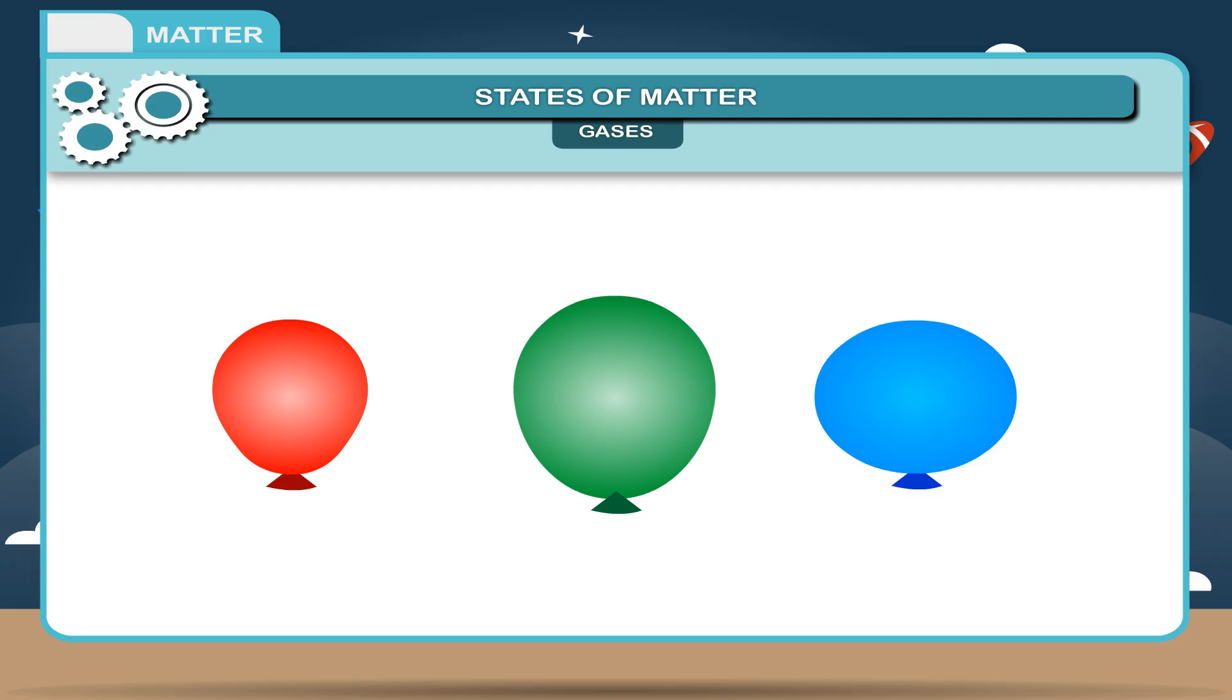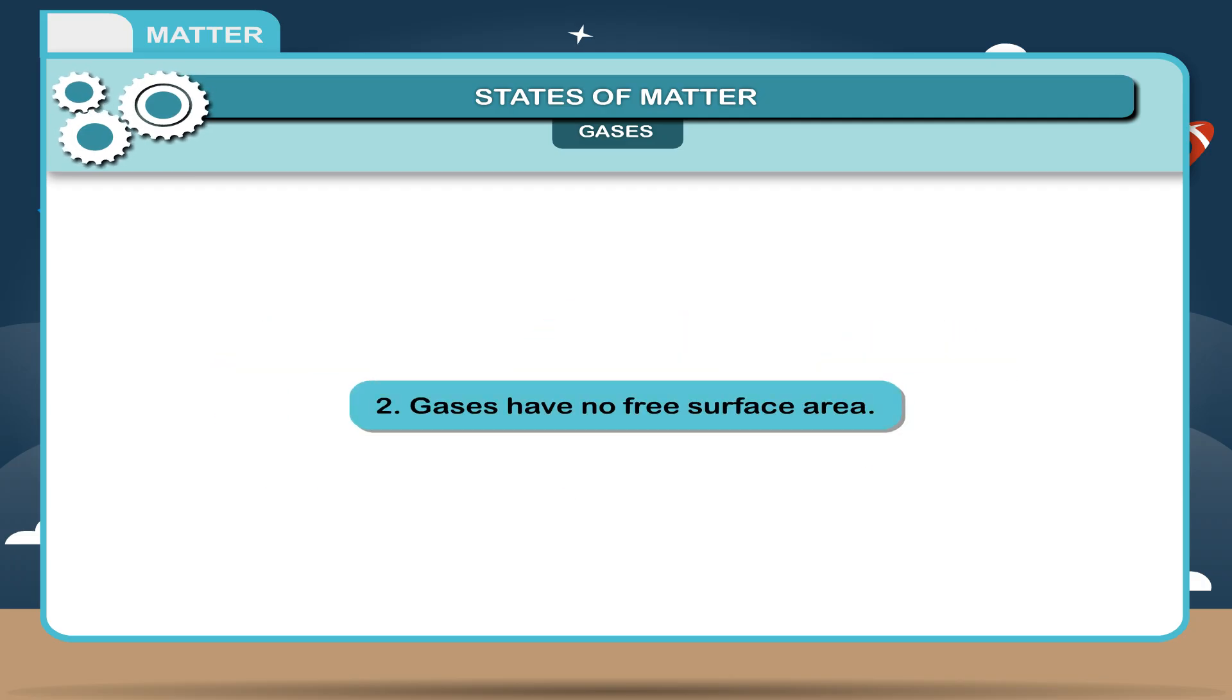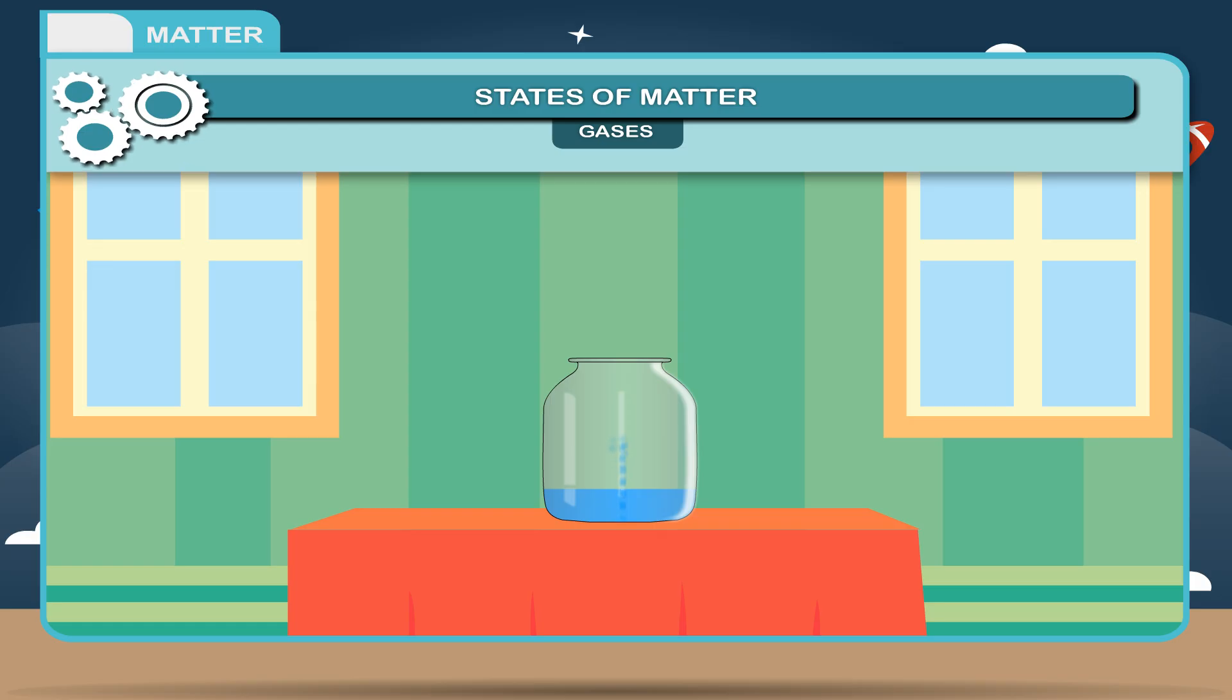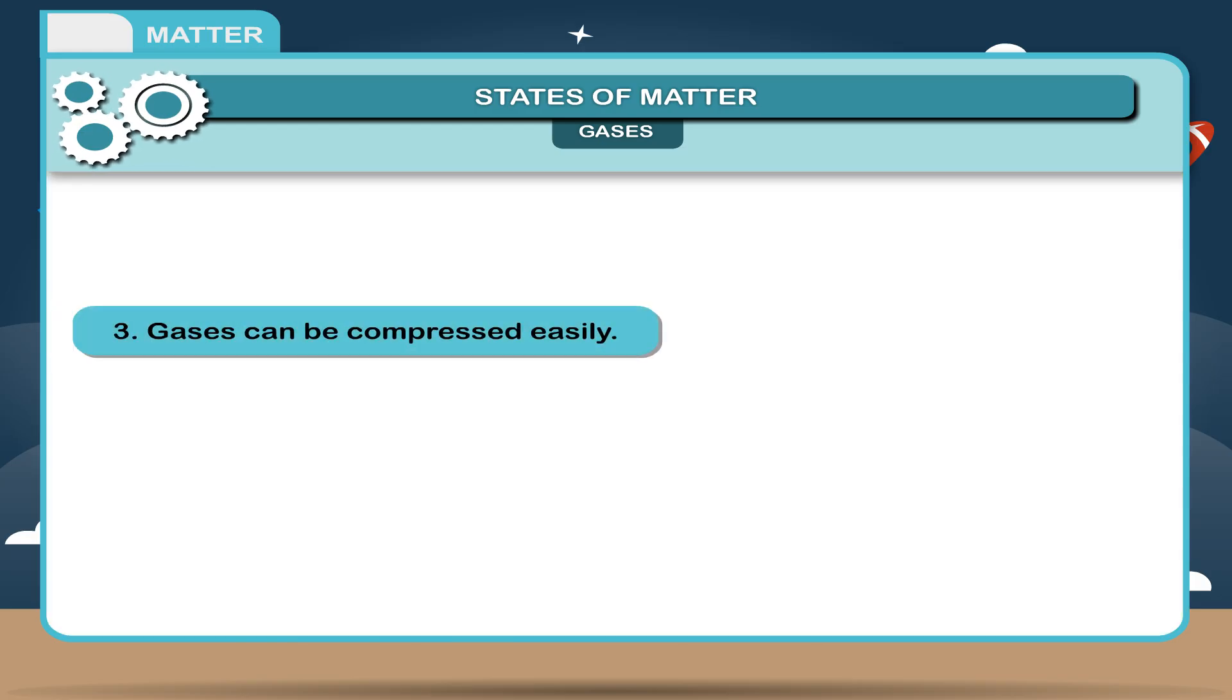Result: This proves that gas has no fixed shape. 2. Gases have no free surface area. Reason: Molecules escape from the open surface. 3. Gases can be compressed easily.